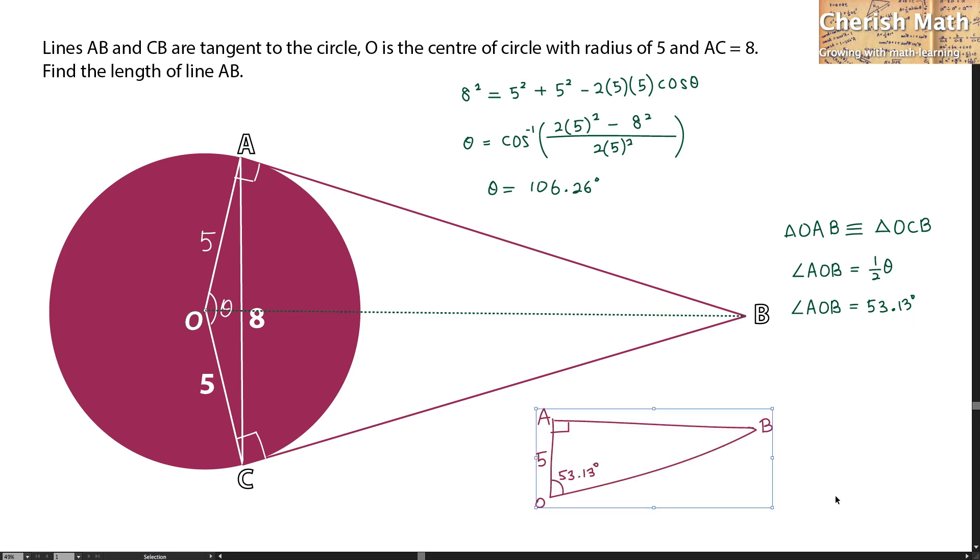Let me sketch out the triangle OAB from this original diagram. And to find what is the length of AB here, I'm going to use trigonometry with tangent. And that's going to be tangent 53.13 degrees equals the...